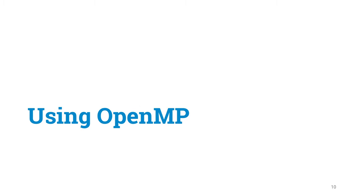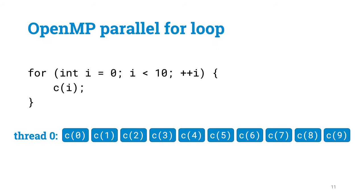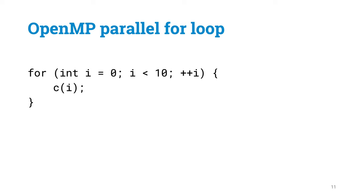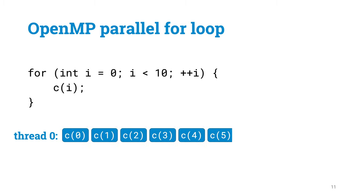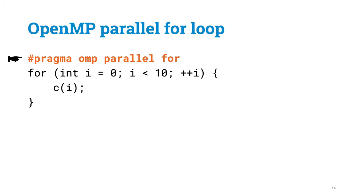Let's now see how to use OpenMP to distribute long-running computations among multiple CPU cores. Let's start with a very simple example, where we want to do some computation C ten times, with different parameter values 0, 1, and so on, up to 9. Maybe operation C is some heavyweight simulation that you want to try out with different values of parameters. The sequential solution simply calls C in a loop, and then we will have one thread of execution that runs C(0), then C(1), and so on up to C(9). One CPU core is doing work, all others are idle. Let's just add one OpenMP pragma directive before the loop.